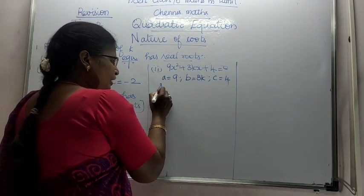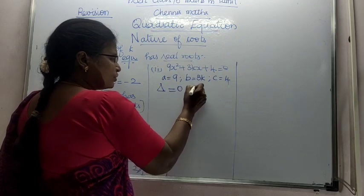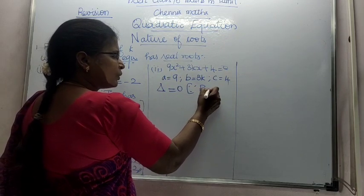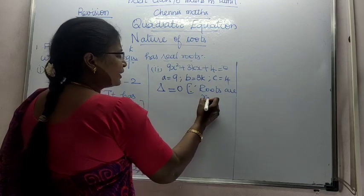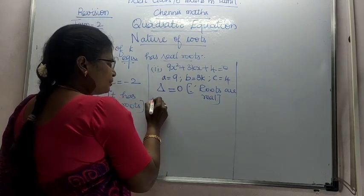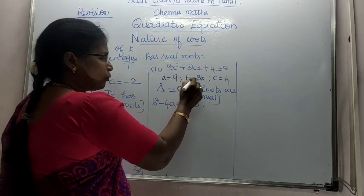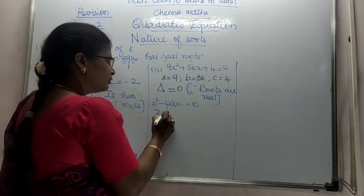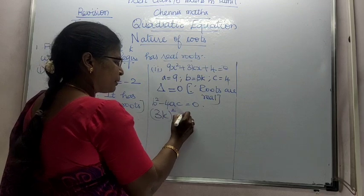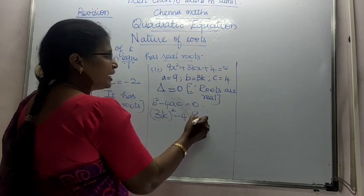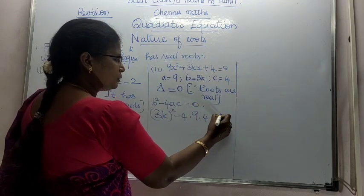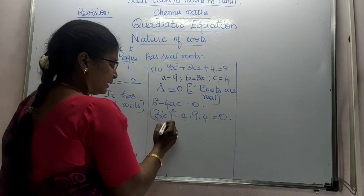We are going to do del is equal to 0, since the roots are real. Next, b squared minus 4ac is equal to 0. What is b over here? 3k squared minus 4 into a into c is equal to 0.